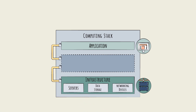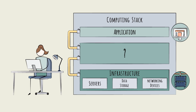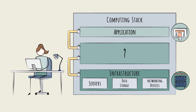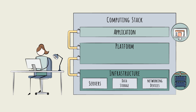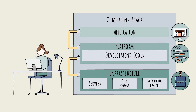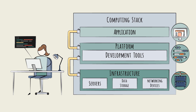There is also a middle layer of software that provides some connective tissue between the infrastructure and the application. A key part of this tissue is software designed to simplify and enhance the application development process. In the context of cloud computing, this is often called the platform. Basically, the platform houses code used to create and manage other code. These are called development tools, or developer services. Platform layer development tools are like building blocks that can be used to create new applications. Rather than reinventing the wheel every time, developers can make use of these pre-existing blocks.